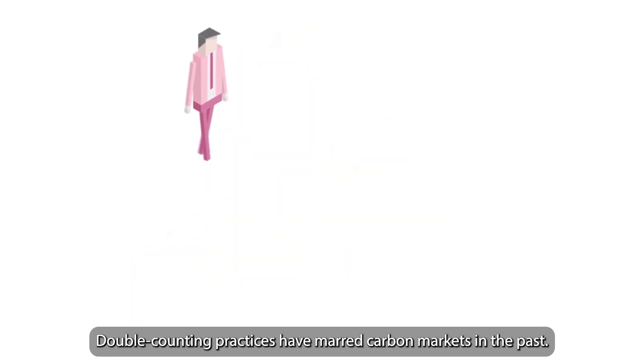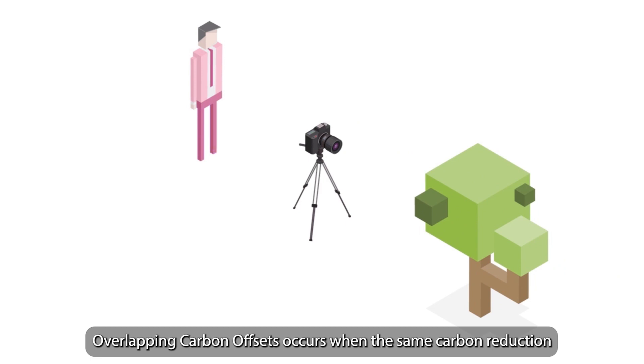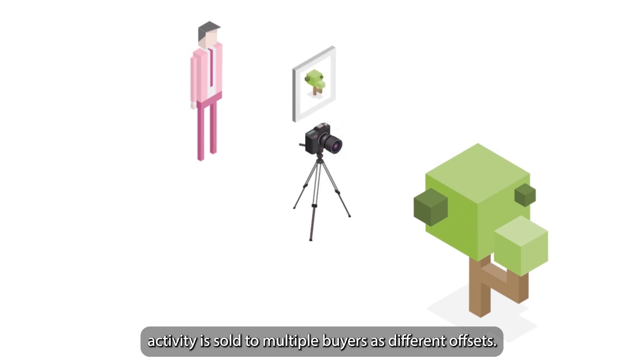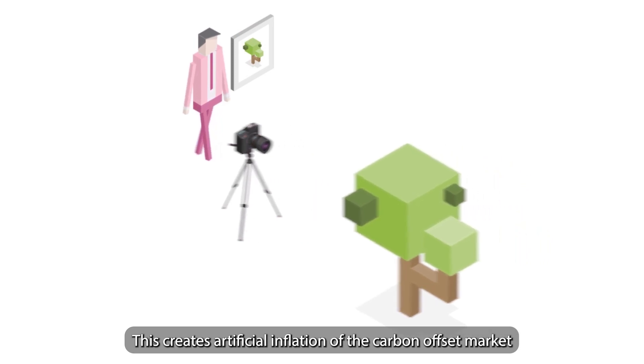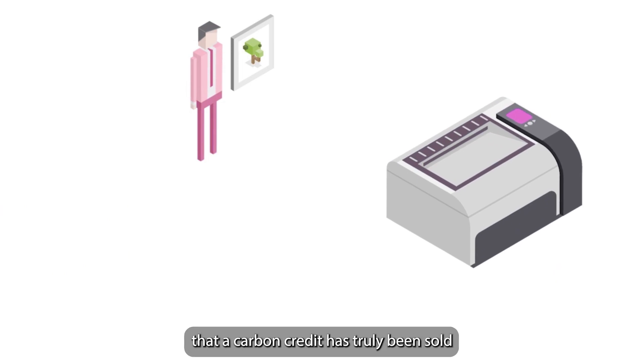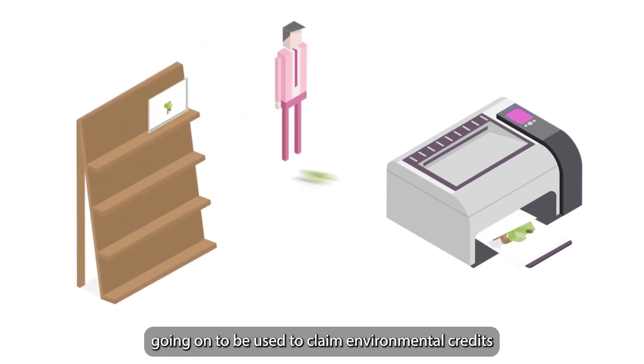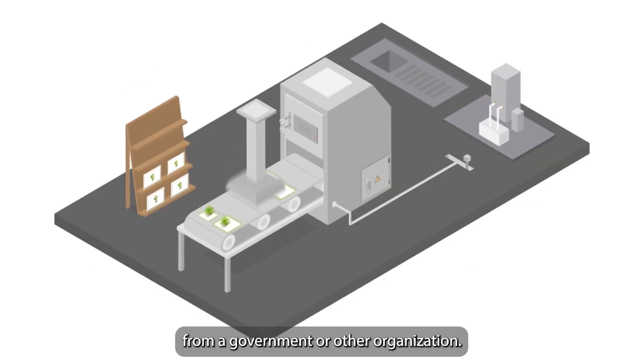Double counting practices have marred carbon markets in the past. Overlapping carbon offsets occurs when the same carbon reduction activity is sold to multiple buyers as different offsets. This creates artificial inflation of the carbon offset market and makes it difficult to be confident that a carbon credit has truly been sold only once. At times, a carbon offset can be sold to multiple buyers before subsequently going on to be used to claim environmental credits from a government or other organization.